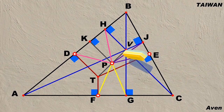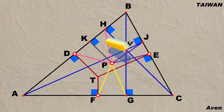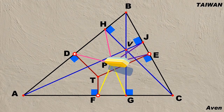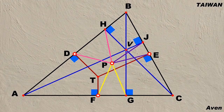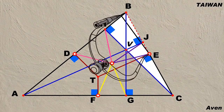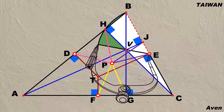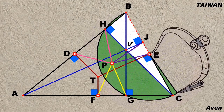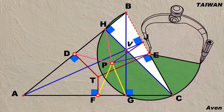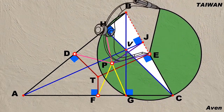Now let's erase some line segments. The complicated figure looks clear again. Here we can see a white right triangle. Since the midpoint of the hypotenuse of a right triangle is also the center of the circumcircle.